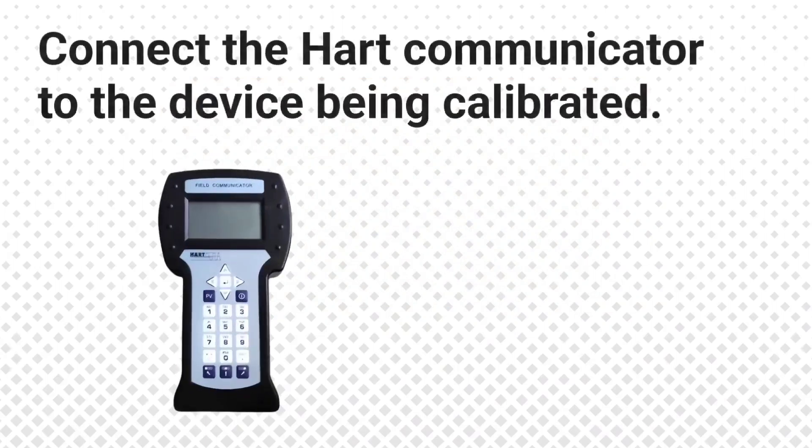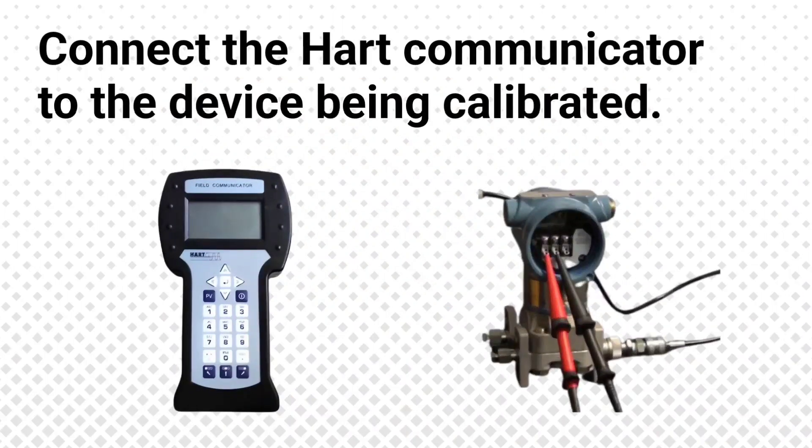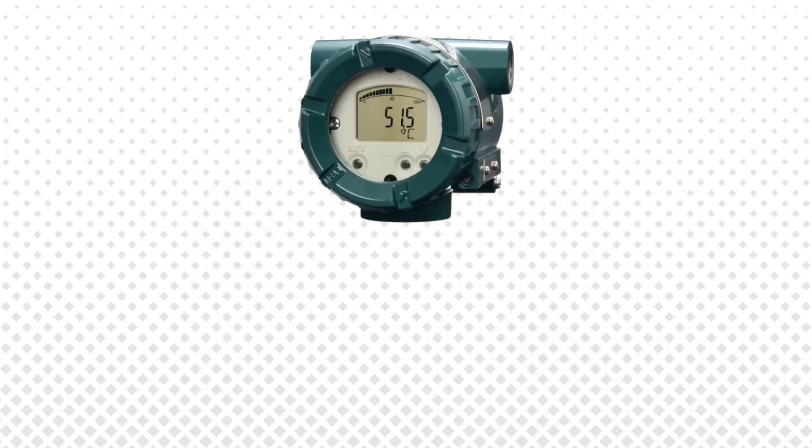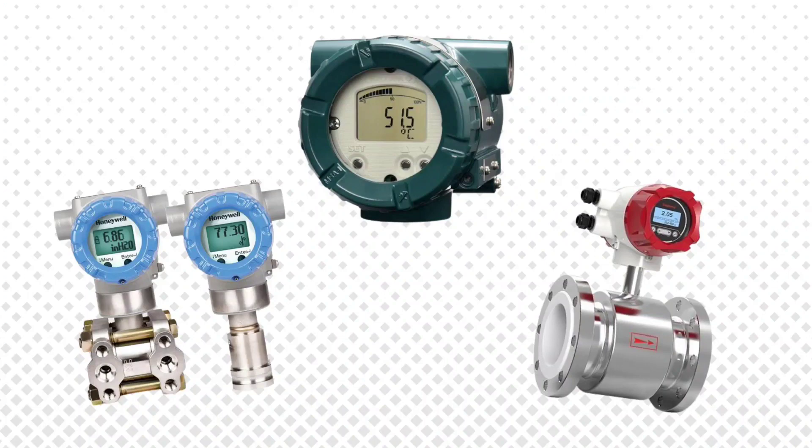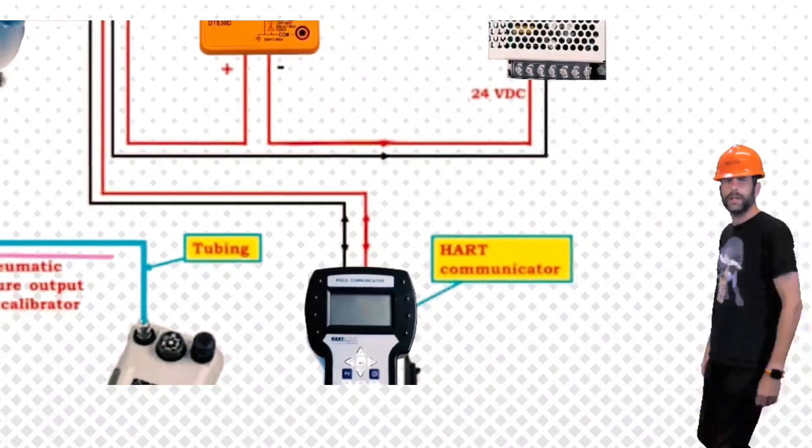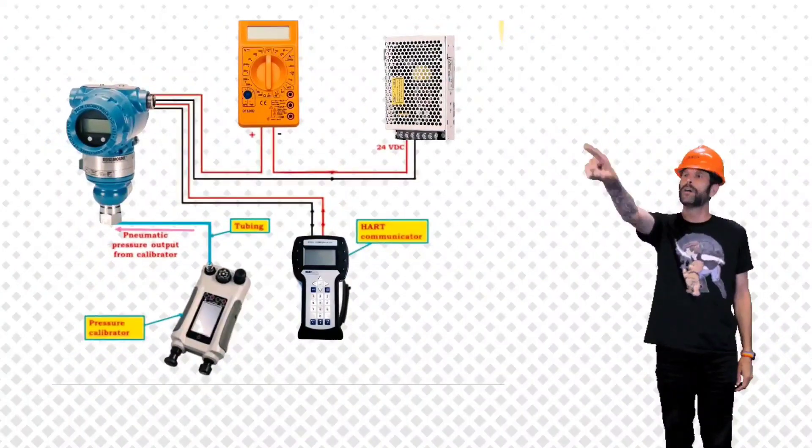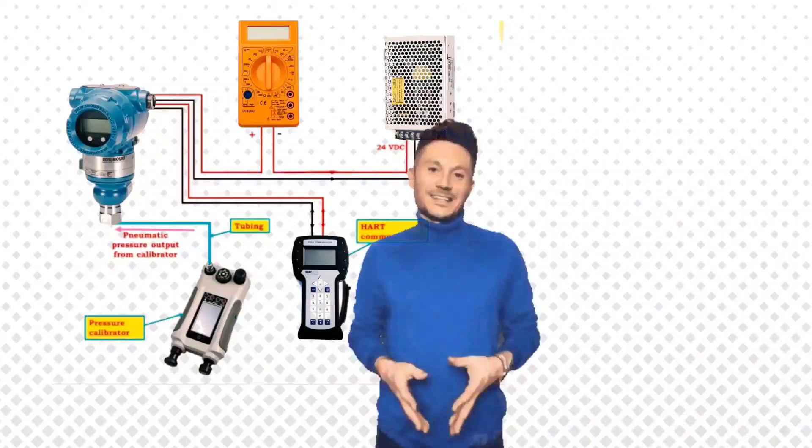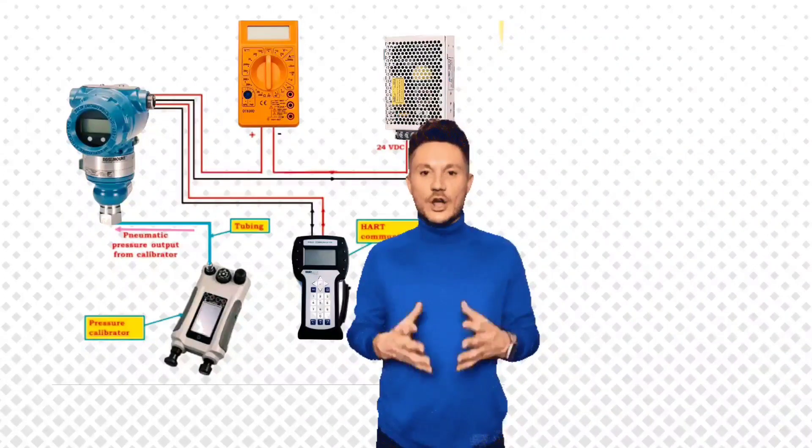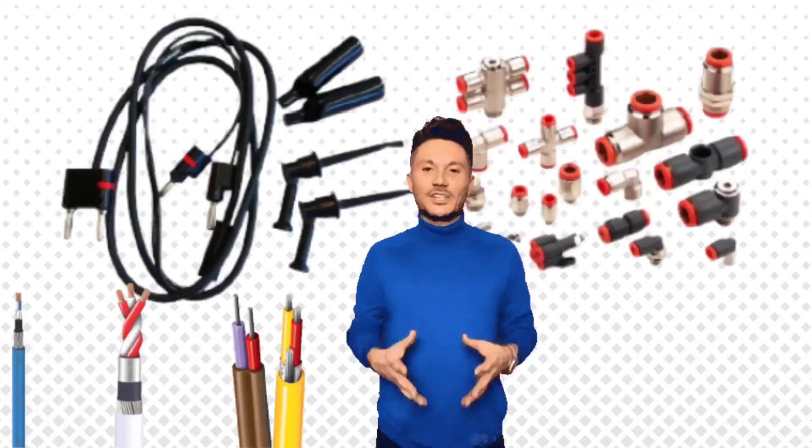The first step is connect the Hart communicator to the device being calibrated. Here you can easily do the calibration of these instruments using Hart communicator. For this, you will need appropriate cables and connectors, whatever instrument you are calibrating. Accordingly, you will take cables and connectors.